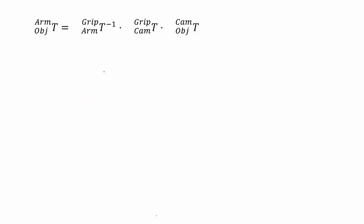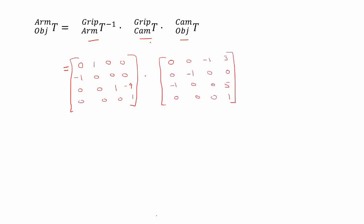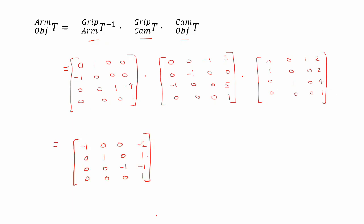The final step in finding the transformation matrix of the object relative to the arm is to multiply the three transformation matrices together: the inverse transformation matrix (gripper relative to arm), times the camera relative to the gripper, times the object relative to the camera. Multiplying these three matrices together gives the final answer for the transformation matrix of the object relative to the arm.